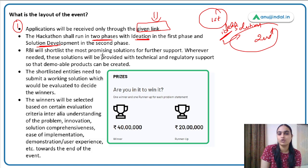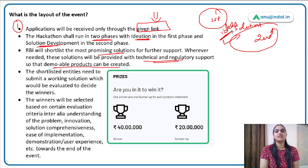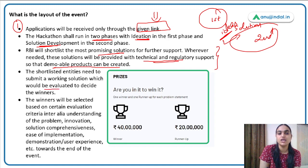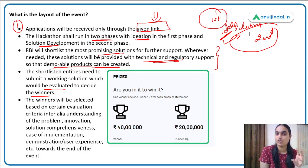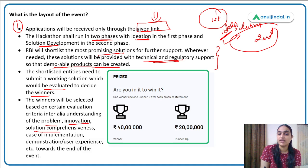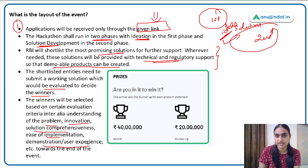RBI will shortlist the most promising solutions and will also provide technical and regulatory support so that demo-able products can be created. Once ideas are selected, a product demo needs to be developed, and for that RBI will provide necessary support. The shortlisted candidates will then submit a working solution. Winners will be selected based on criteria such as the innovation of the solution, comprehensiveness, ease of implementation, demonstration quality, and user benefit.